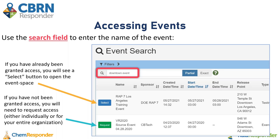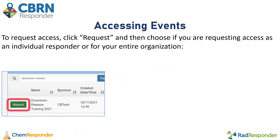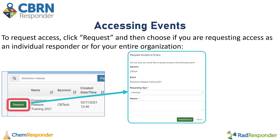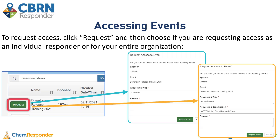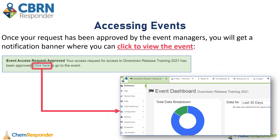If you do not have access to the event, you will need to request access by clicking that green Request button. Here's where you can request access individually or for your entire organization. You'll click that green Request button and choose if you're requesting access as an individual responder or for your entire organization. For each request form, you do need to provide a reason to let the event managers know why you are requesting access. Once your request has been approved by the event managers, you will get a notification banner where you'll be able to click to view the event you were just granted access to.